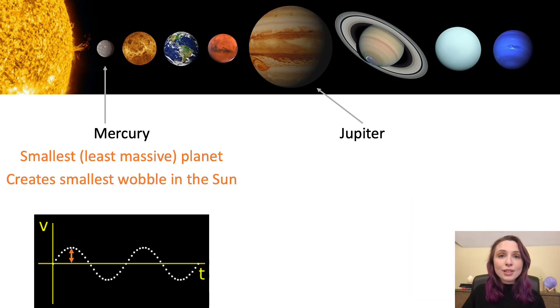I also said that we can measure how big of a wobble an exoplanet creates in its star. If we look at Mercury again, Mercury is the smallest or least massive planet in the solar system. So we know that it creates the smallest wobble in the sun. Look at how short that vertical arrow is.